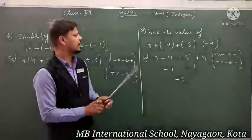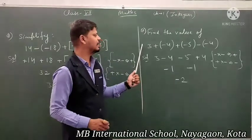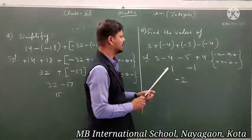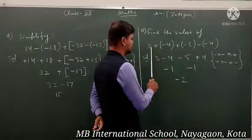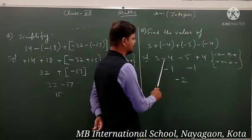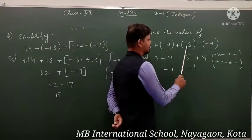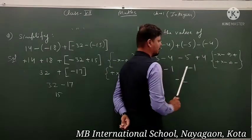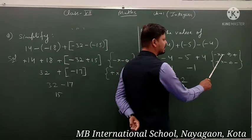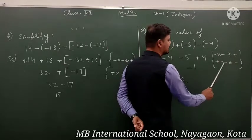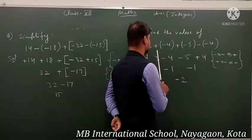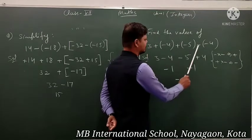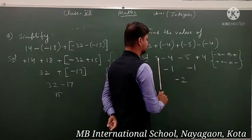Now next question: find the value of — again, value sign and subtraction. Addition and subtraction both mixed. So first we can see: plus and minus, 3 plus and minus, minus minus 5 and minus minus minus plus 4. Now same sign multiply — plus multiply minus is minus. Apply sign is minus. Same sign multiply gives plus.